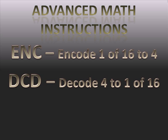So if all the bits in the source were off and you turned on bit 15, it would put an F in the destination. That's encode 1-of-16 to 4. Decode is just the opposite — it takes whatever is in the 4-bit value and decodes it to turn on 1 of 16 bits.